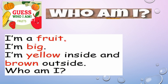There are so many fruits, but your classification will be reduced. Take only those fruits which are big in size. Then the next clue: I am yellow inside and brown outside. Think — which fruit is yellow inside? For example, red inside and green outside means it's a watermelon. So be careful about the inner and outer colors.